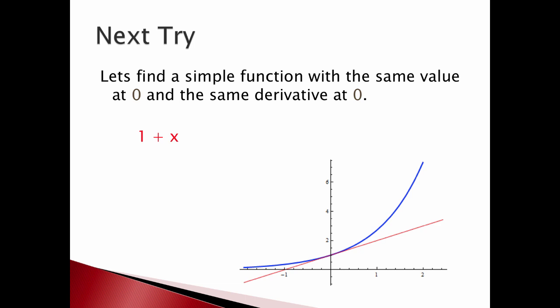So e to the x is in blue, the tangent line is there in red and if you check, the tangent line turns out to be 1 plus x. Now if you look really close around zero, depending on the resolution of your monitor, it looks kind of purplish. You can hardly tell the red tangent line from the blue graph of e to the x if you're very close to the origin.